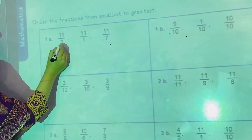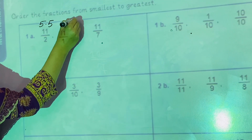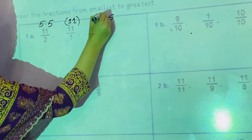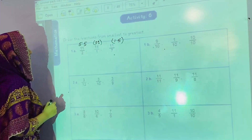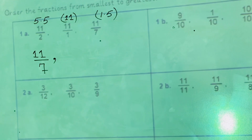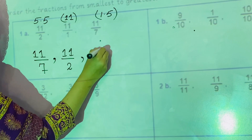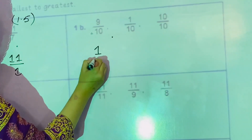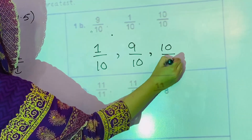In the first question, when we divide 11 by 2 the answer is 5.5. For 11 by 1, the answer is obviously 11. And when we divide 11 by 7 we get 1.5. Now it is much easier to see which one is the smallest — 1.5 means 11 by 7. So we write the least one first, then 11 by 2, and the last one is 11 by 1. In part B, the smallest one is 1 by 10, then 9 by 10, and then 10 by 10.